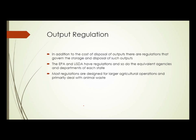Most of these regulations are designed for larger agricultural operations and primarily deal with animal waste. For instance, there are regulations regarding how retention areas have to be built to contain the waste from hogs, distances from streams, and the types of enclosures that have to be available. The regulations are primarily concerned with operations that generate a lot of waste.